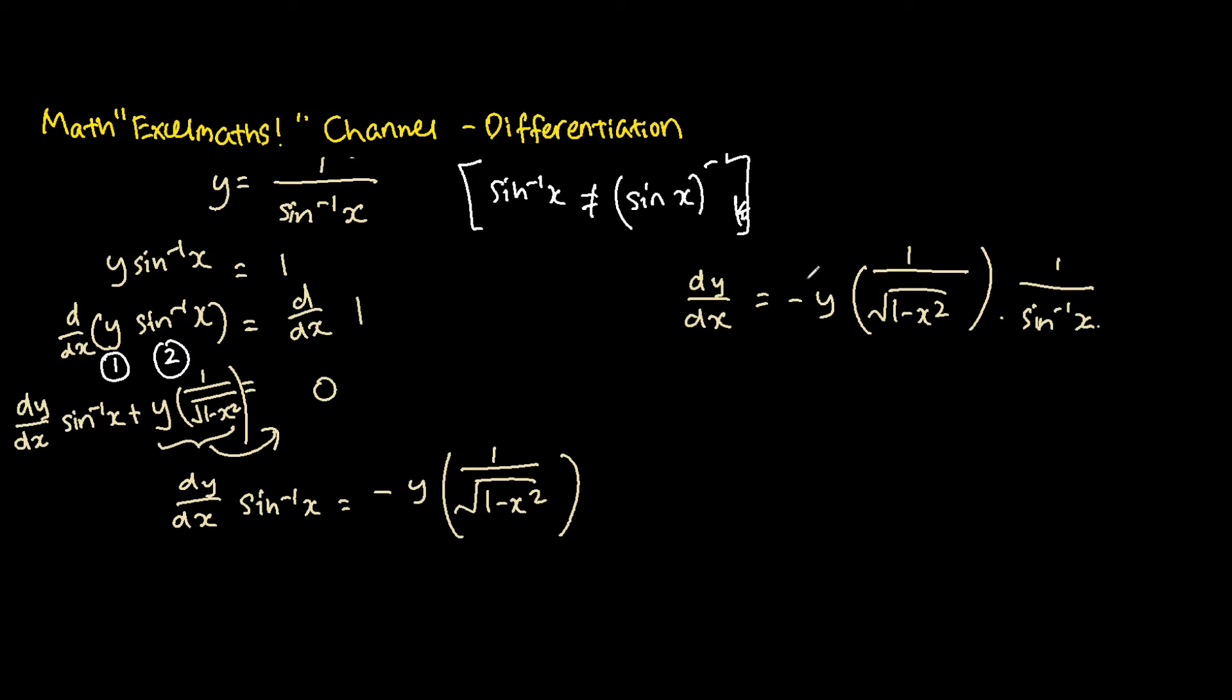So now we know that y is equals to 1 over sine inverse x, we can just basically substitute into the equation itself, we have negative 1 over sine inverse x, times 1 over sine inverse x.